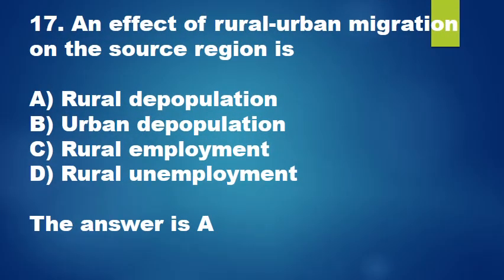Question 17: An effect of rural urban migration on the source region is: A. Rural depopulation, B. Urban depopulation, C. Rural employment, D. Rural unemployment. The answer is A.